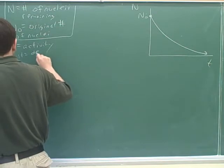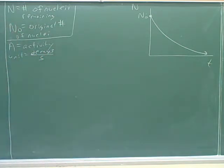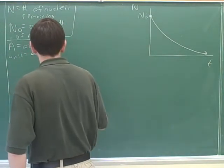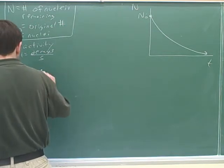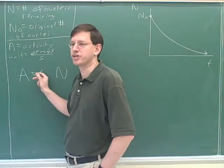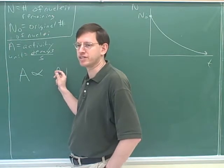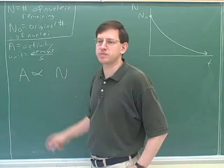The unit for A is the number of decays per second. You recognize this symbol stands for proportional. It should make sense that the amount of decay is proportional to the number of nucleuses. For example, if you have twice as many nucleuses, you would have twice as many decays per second.